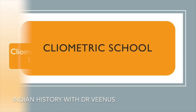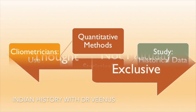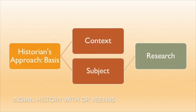Cliometric school: Cliometricians use quantitative methods and statistical analysis to study historical data. These schools of thought are not mutually exclusive, and historians often draw from multiple approaches depending on the context and subject of their research.